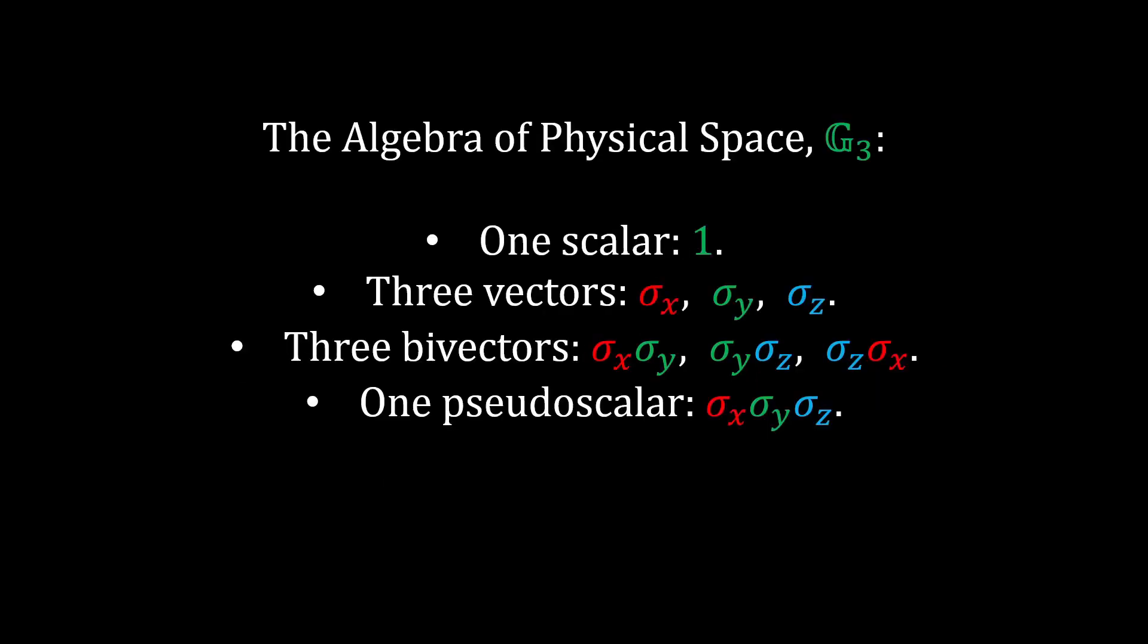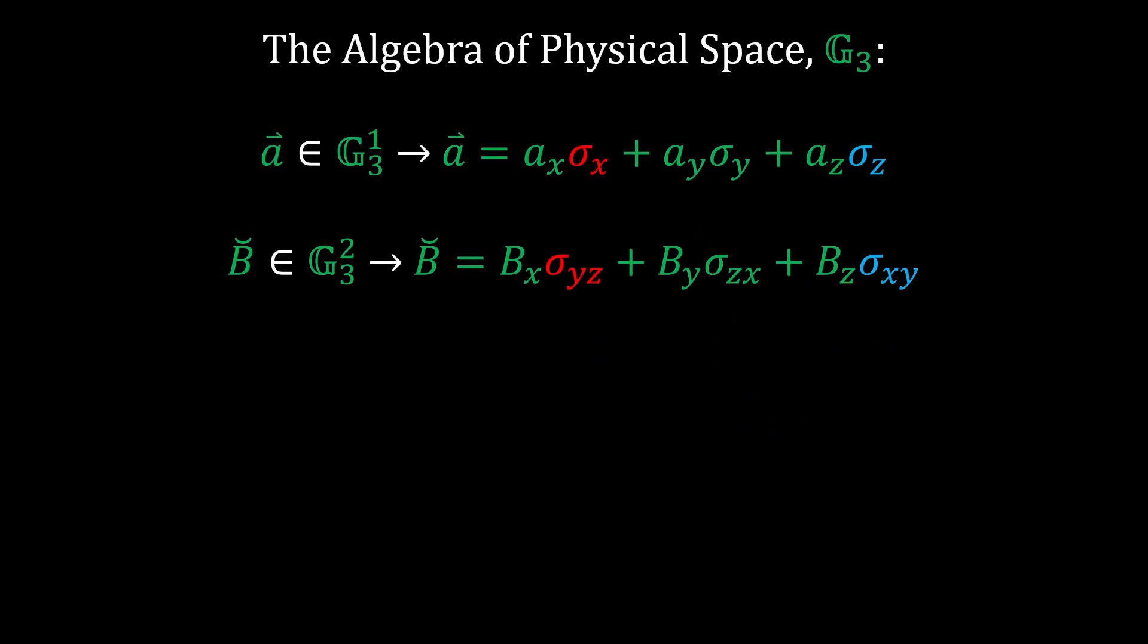The specific algebra we will use is the algebra of physical space, which has the following orthonormal basis. There is one unit scalar and one unit pseudoscalar. There are three unit vectors and three unit bivectors. A general vector a can be represented as a linear combination of the unit vectors sigma x, y, and z. Likewise, a general bivector b can be represented as a linear combination of the unit bivectors sigma xy, yz, and zx.